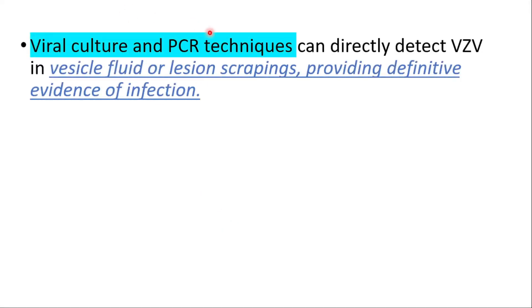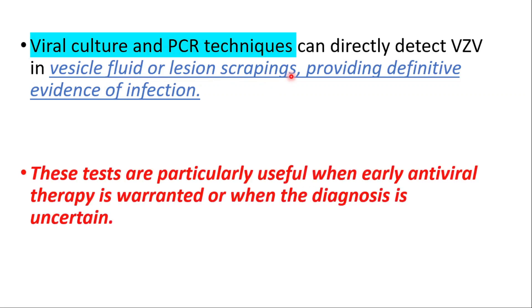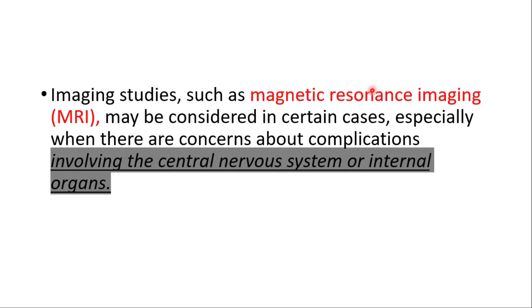Viral culture and PCR techniques can directly detect VZV in vesicle fluid or lesion scrapings, providing definitive evidence of infection. These tests are particularly useful when early antiviral therapy is warranted or when the diagnosis is uncertain. Imaging studies like MRI may be considered in certain cases, especially when there are concerns about complications involving the central nervous system or internal organs.